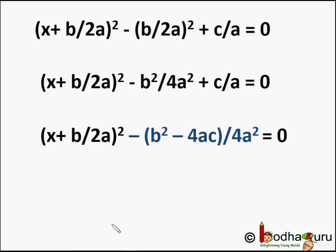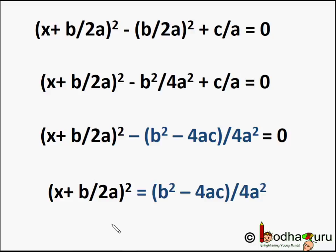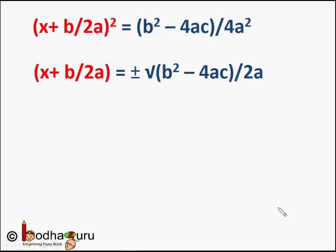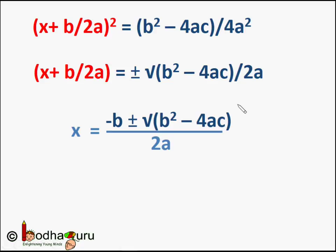So the equation becomes (x + b/2a)² minus (b² − 4ac)/4a² = 0. We can take (b² − 4ac)/4a² to the other side, so it becomes (x + b/2a)² = (b² − 4ac)/4a². Now we take the square root on both sides, so it becomes x + b/2a = ±√(b² − 4ac) / √(4a²), which equals 2a. Taking b/2a to the other side gives x = (−b ± √(b² − 4ac)) / 2a.